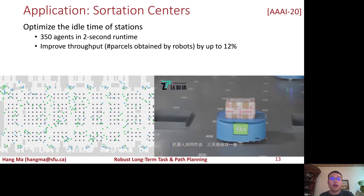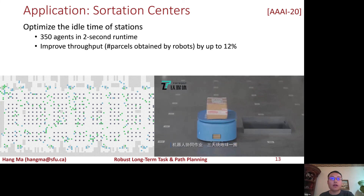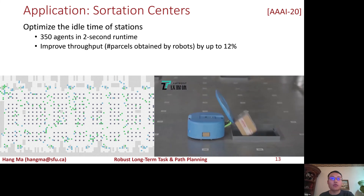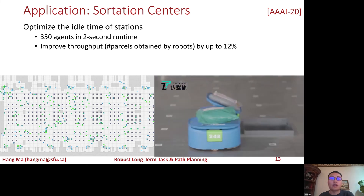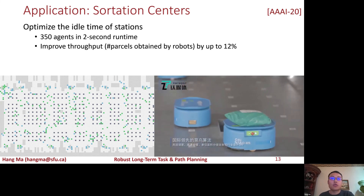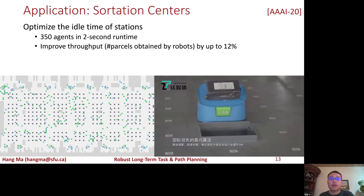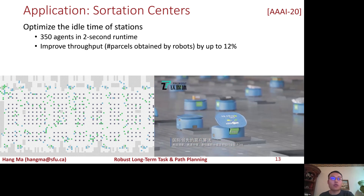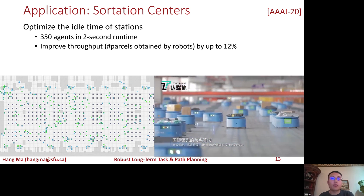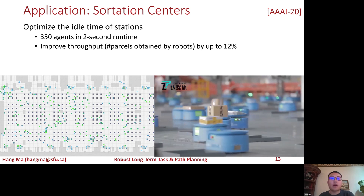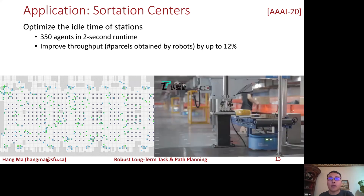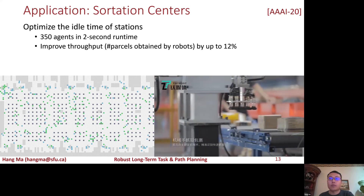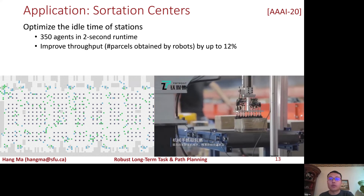Our algorithm can compute good solutions for 350 agents within a two-second runtime limit, and also improves the throughput — measured by the number of parcels processed by robots — by up to 12% for the real-world data.